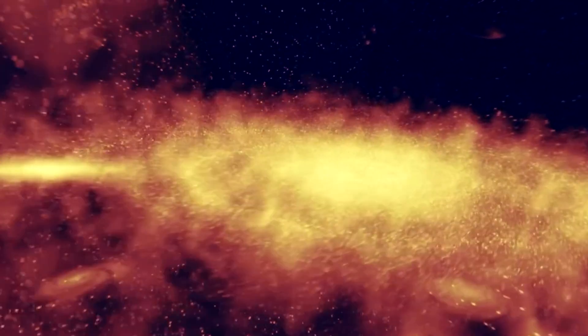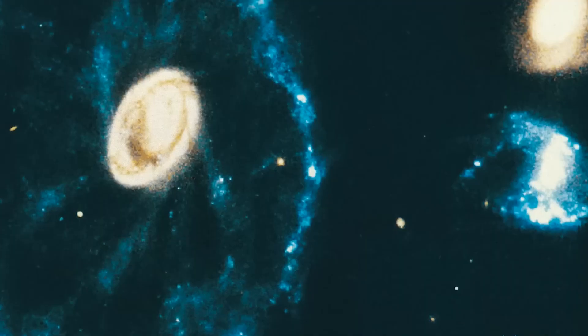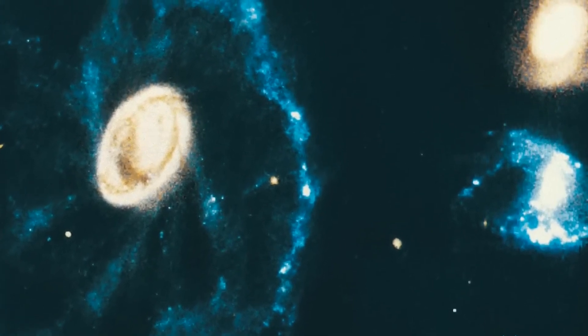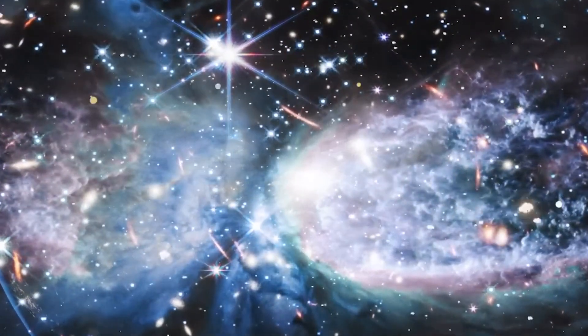The collision occurred in the Cartwheel Galaxy's center, resulting in two visible rings that spread out from its impact site. The bright inner ring is teeming with hot dust and clusters of young stars, while the outer ring is home to newborn stars and supernovas.